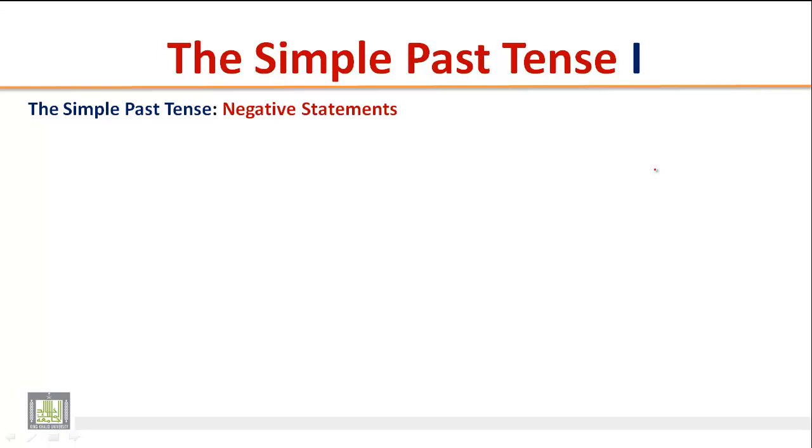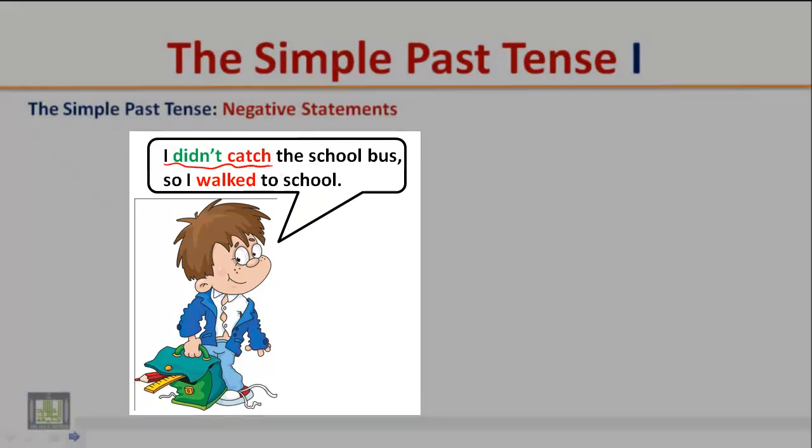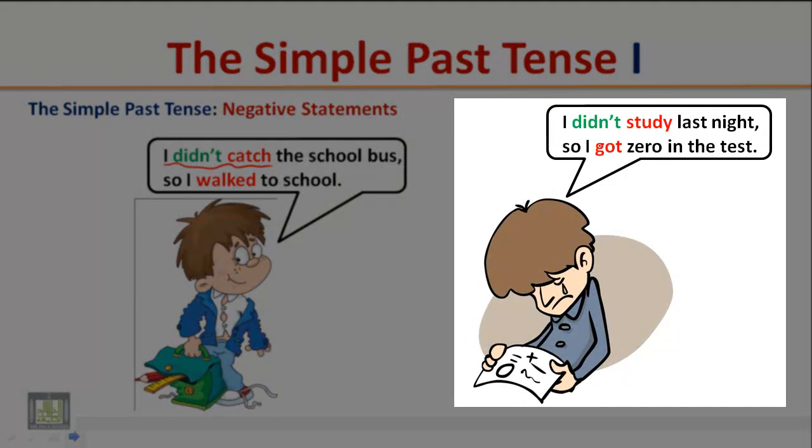The Simple Past Tense: Negative Statements. Listen carefully to the following short conversations and pay attention to the negative form of the Simple Past Tense. I didn't catch the school bus, so I walked to school. I didn't study last night, so I got zero in the test.